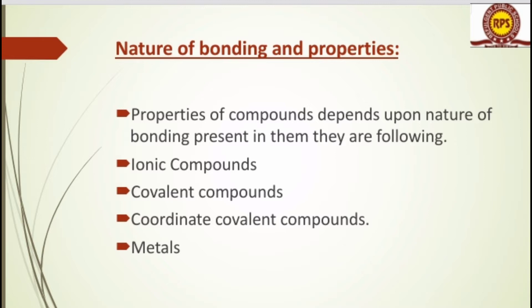Properties of compounds depend upon the nature of bonding present in them. They are the following: ionic compounds, covalent compounds, coordinate covalent compounds, and metals.